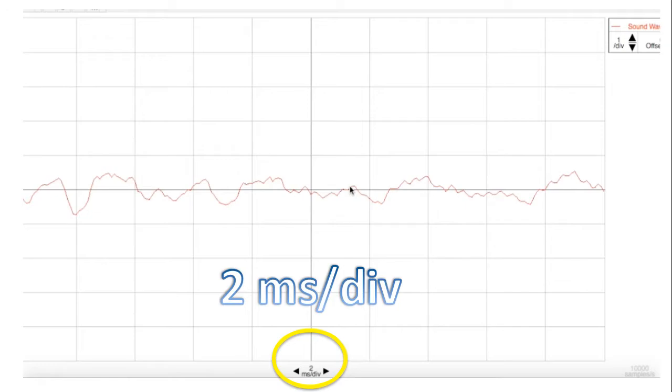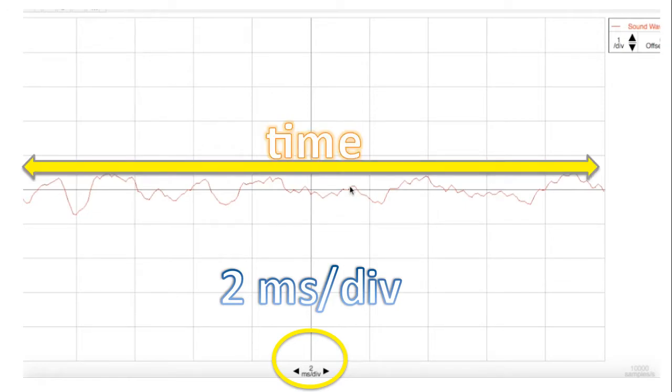Notice on the x-axis, it says 2 milliseconds per division. That means that the x-axis is measuring time, and every division is 2 milliseconds.